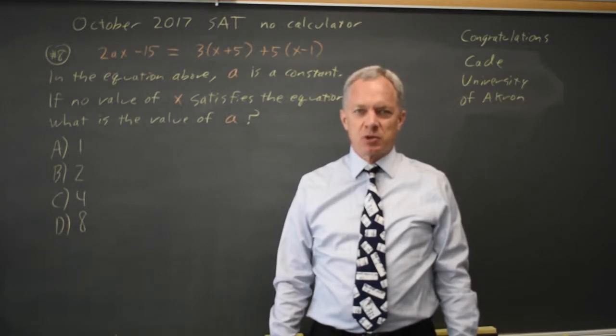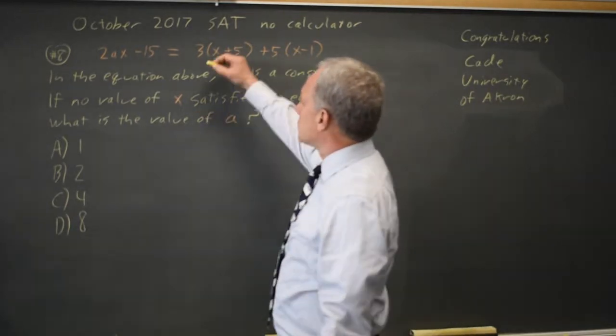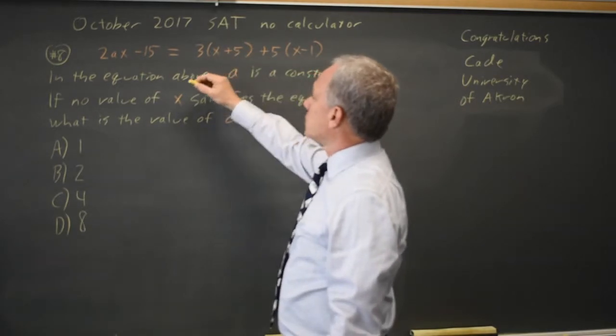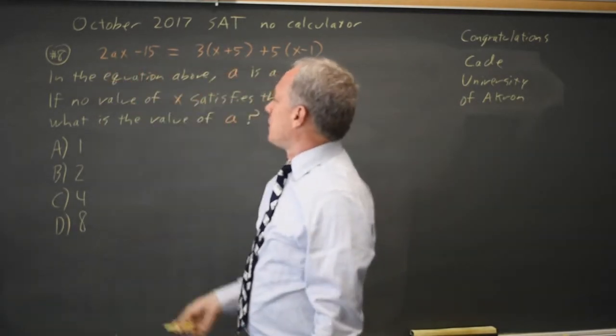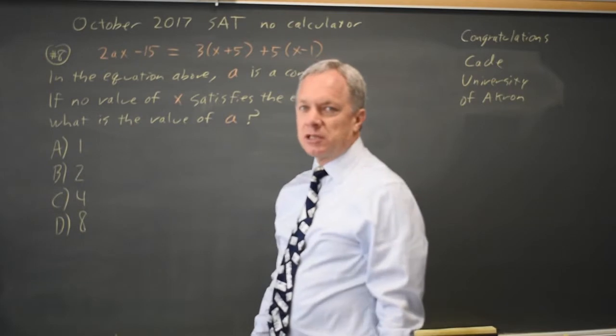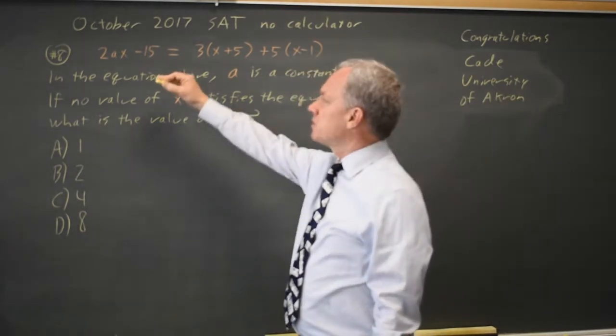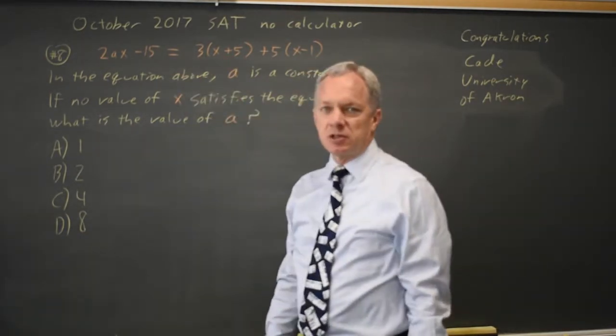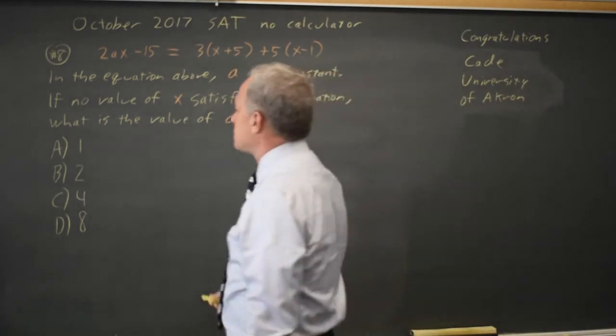This is non-calculator question number 8. The College Board gives us a linear equation with a constant a and says there is no solution. If there is no solution, then the left side and the right side will have the same slope. So I'm going to simplify so I can see the slopes.